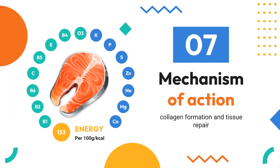Mechanism of Action: In humans, an exogenous source of ascorbic acid is required for collagen formation and tissue repair by acting as a cofactor in the post-translational formation of 4-hydroxyproline in procollagen sequences in collagens and other proteins. Ascorbic acid is reversibly oxidized to dehydroascorbic acid in the body. These two forms of the vitamin are believed to be important in oxidation-reduction reactions. The vitamin is involved in tyrosine metabolism, conversion of folic acid to folinic acid, carbohydrate metabolism, synthesis of lipids and proteins, iron metabolism, resistance to infections, and cellular respiration.